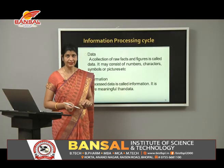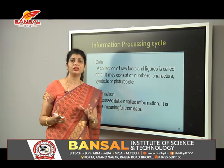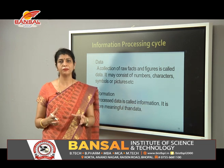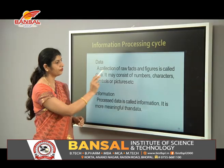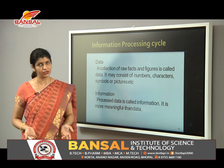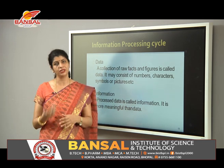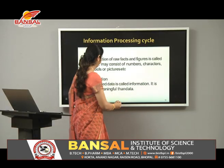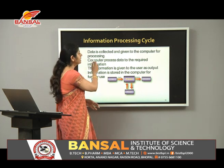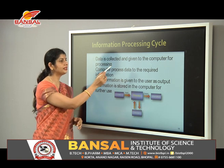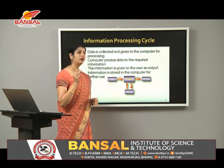The information processing cycle is very important. A collection of raw facts and figures is called data — it consists of numbers, characters, symbols, or pictures. When we process this data, it becomes information. In a computer, data is collected and given to the computer, which processes it into the required information. This information can then be used as output or stored for further use.